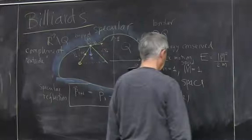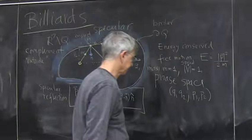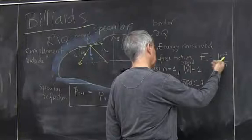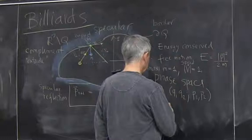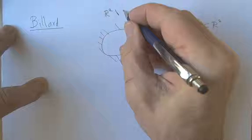And then we need to know the momenta that fully specify the state of the particle, p1, p2. But we have two constraints. One is that we have energy conservation, and the other one is that we have velocity conservation. So this system, phase space is four-dimensional, but dynamics is really two-dimensional.